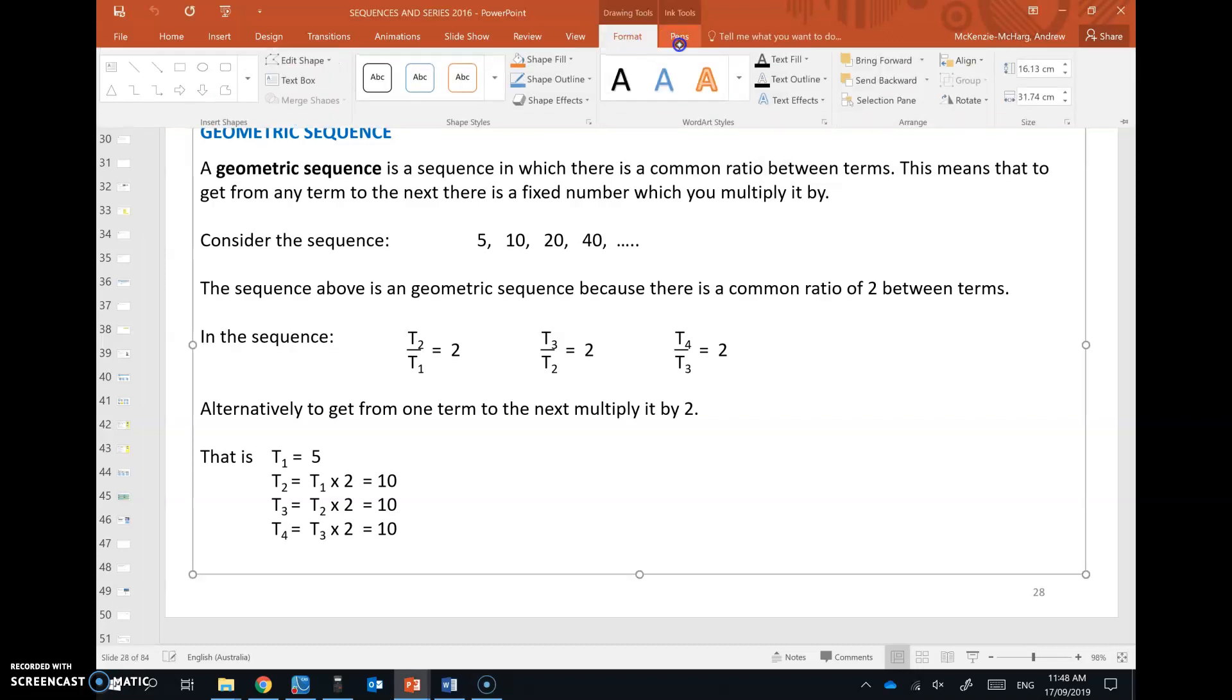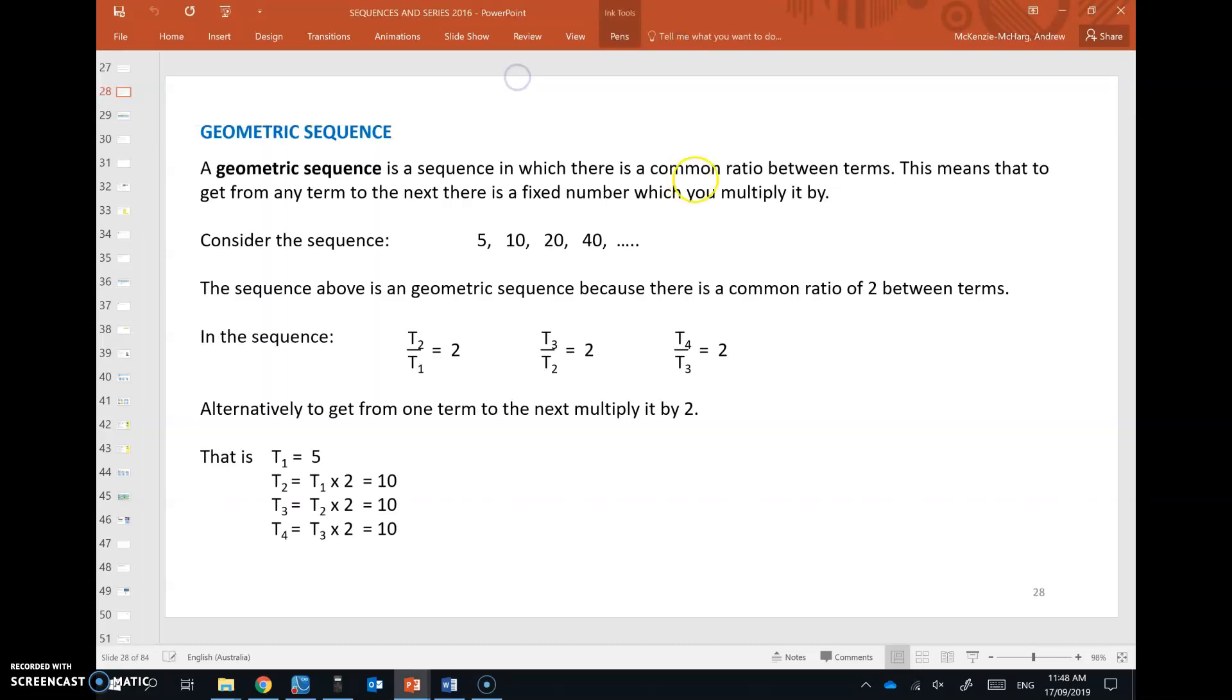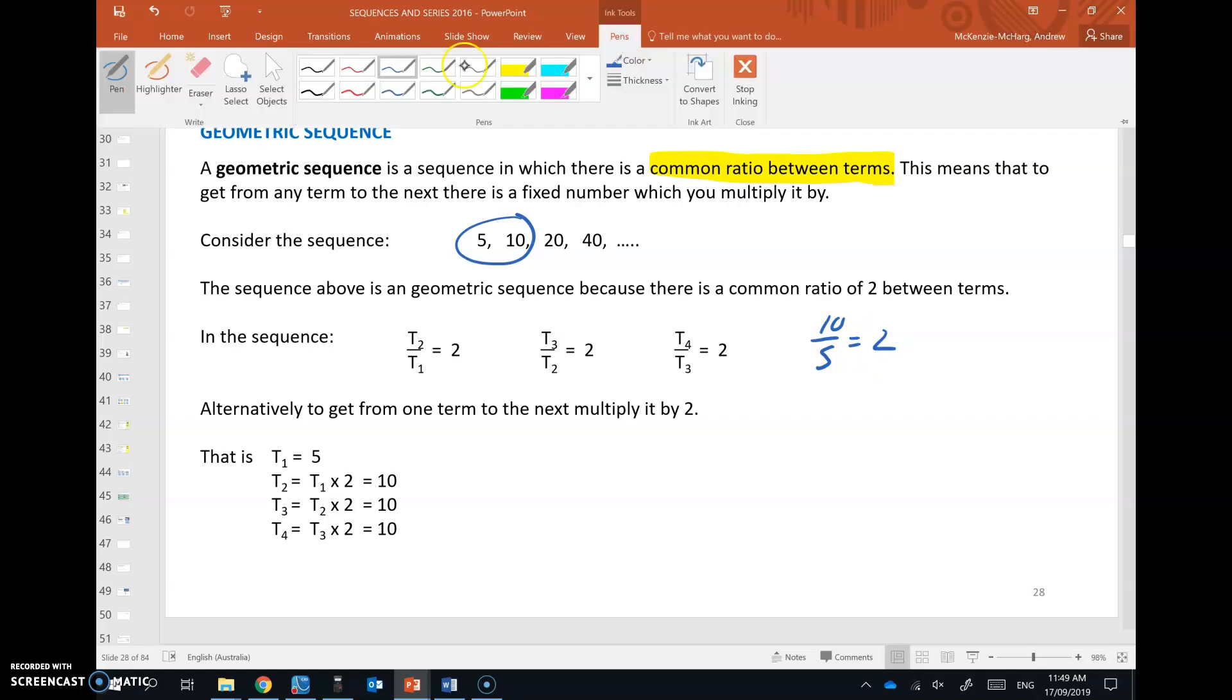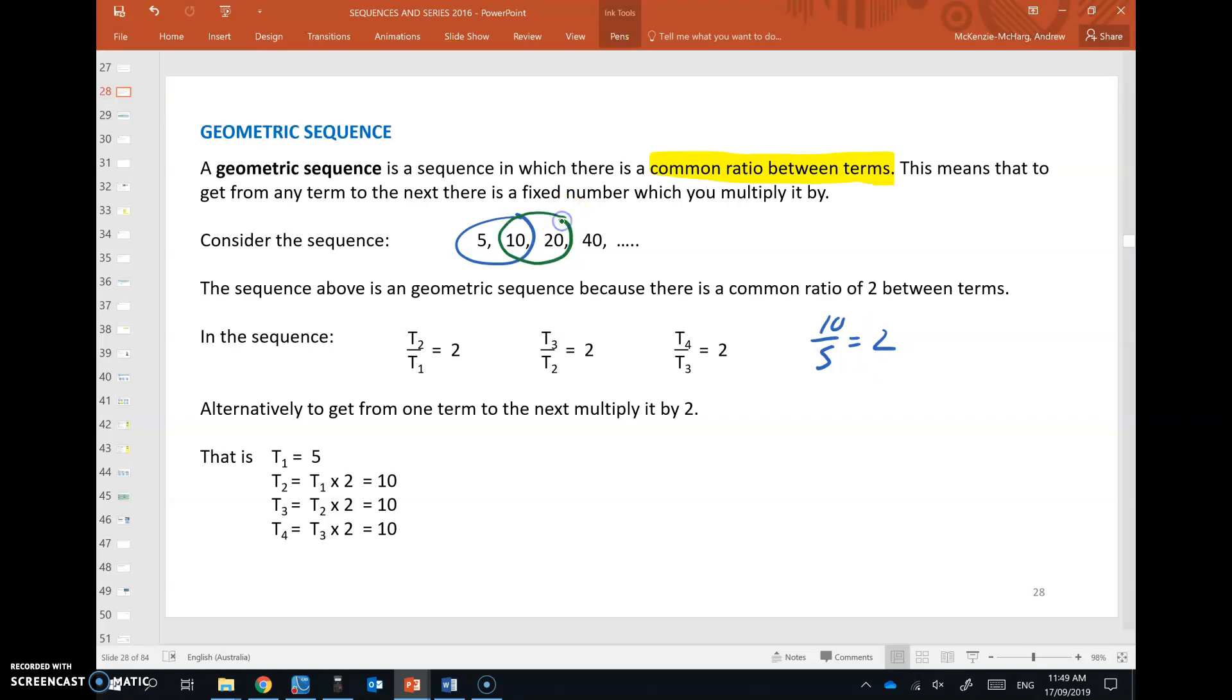In geometric sequences we have a common ratio between terms. So what that means is that if you take consecutive terms and divide them, say these two here in this sequence 10 over 5 which gives 2, if you do that again for the next consecutive terms you'll get the same result each time you divide. So in this case 20 over 10 will also give 2 and you can see that 40 over 20 gives the same again. So that's where we see this common ratio.